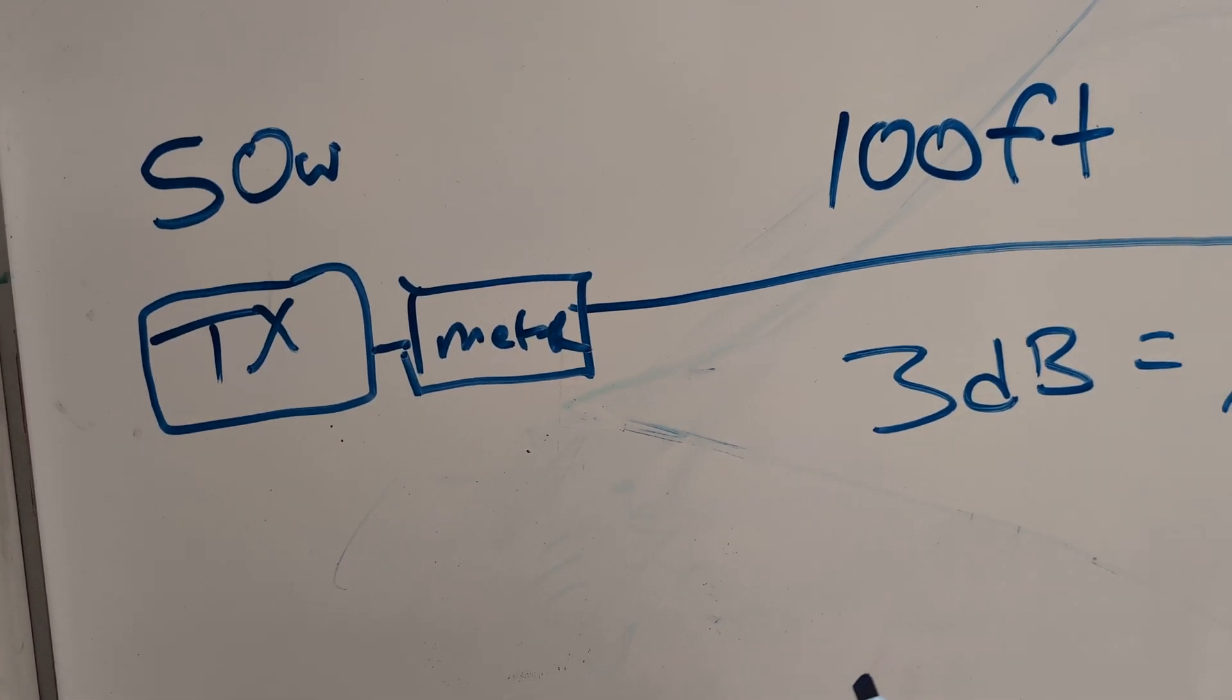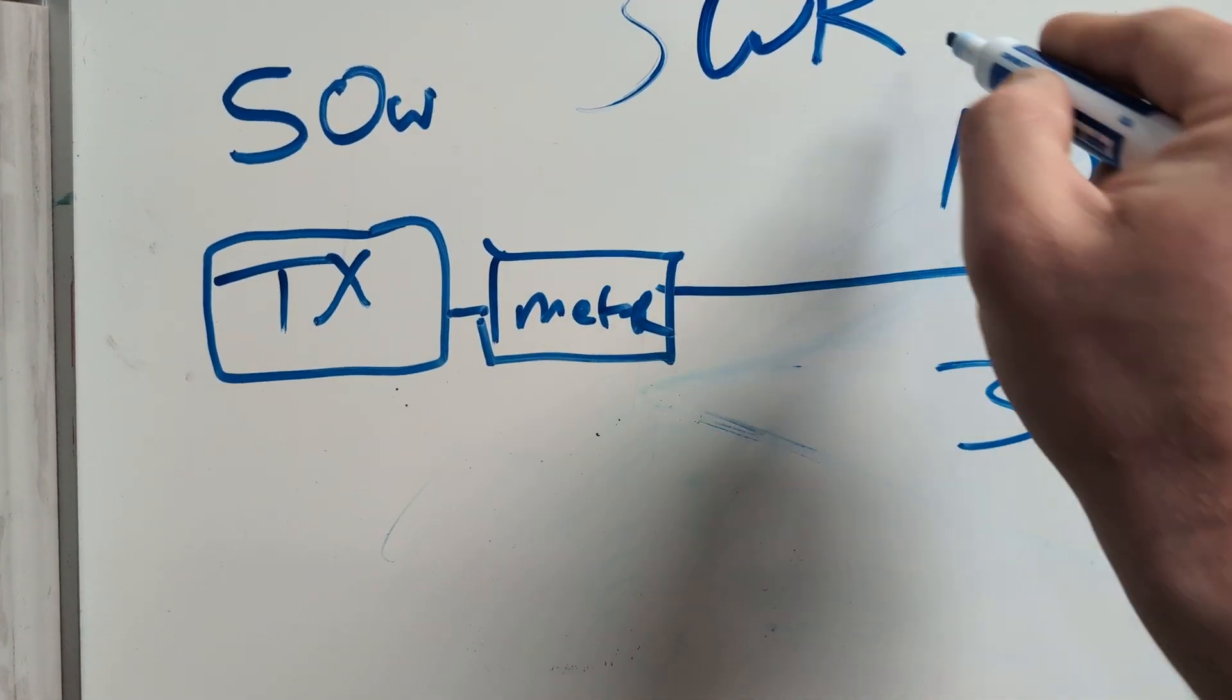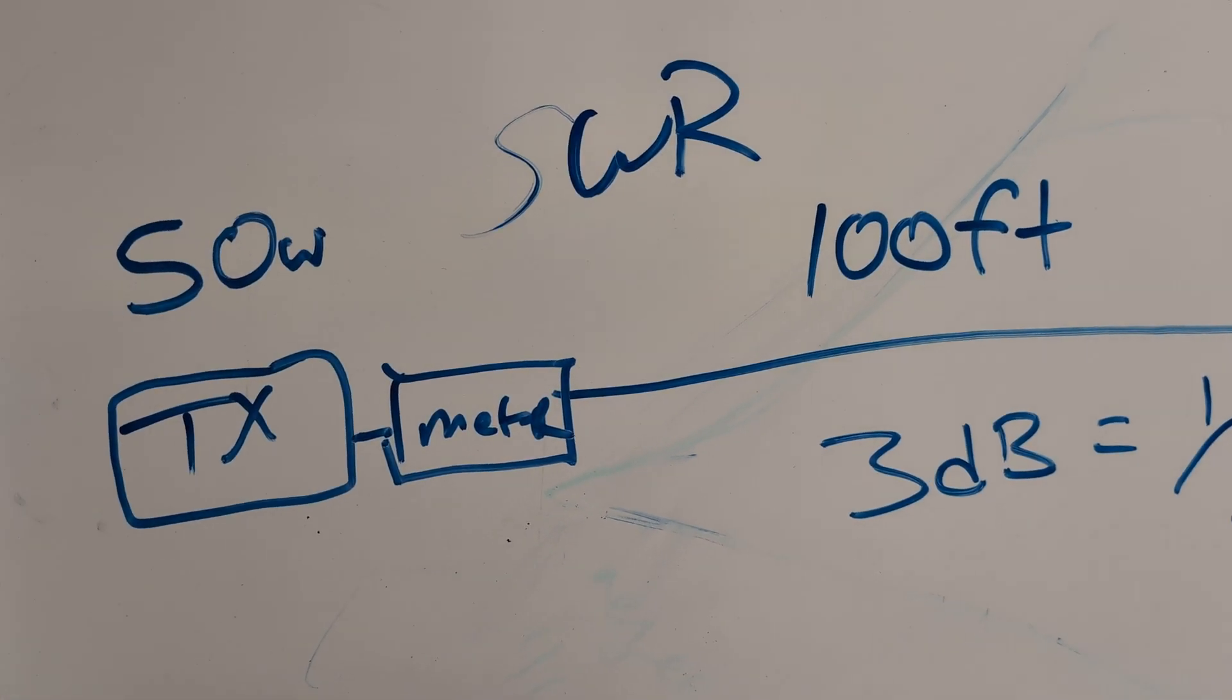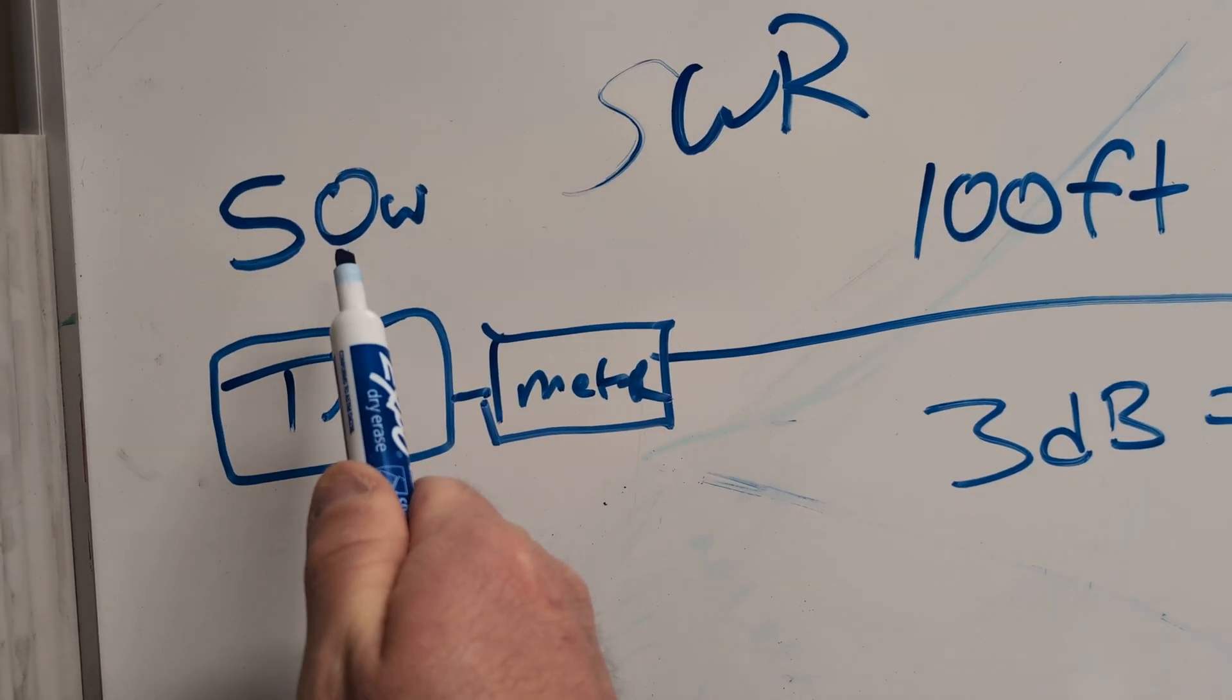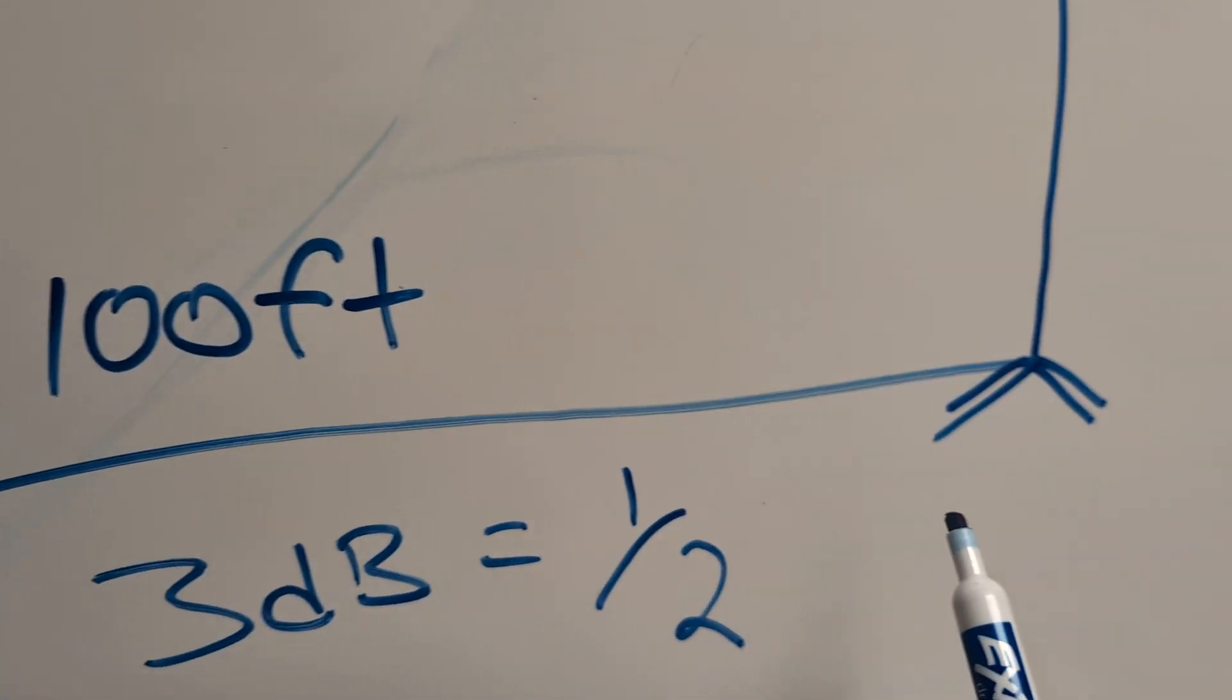I get this all the time. People tell me that my SWR is 1.1, 1.0, and they tell me they are transmitting at 50 watts, their meter is here, and they have 100 feet of coax.